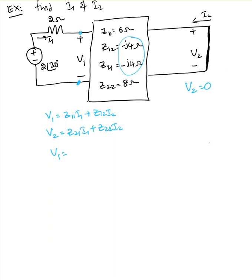Substituting the Z parameter values: equation 1 becomes V1 equals 6·I1 minus j4·I2, and equation 2 becomes 0 equals minus j4·I1 plus 8·I2. Now I have three unknowns — V1, I1, and I2 — and only two equations.